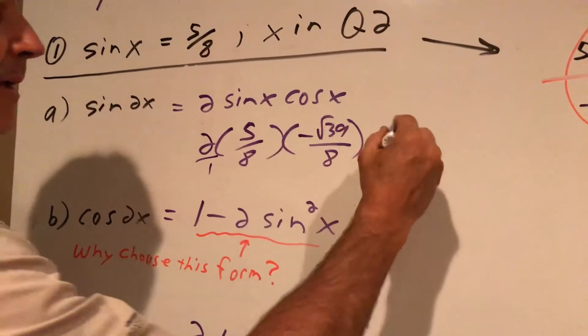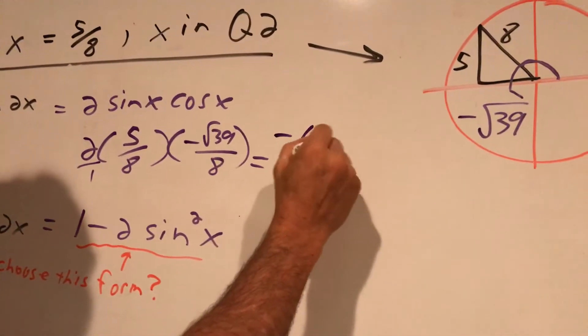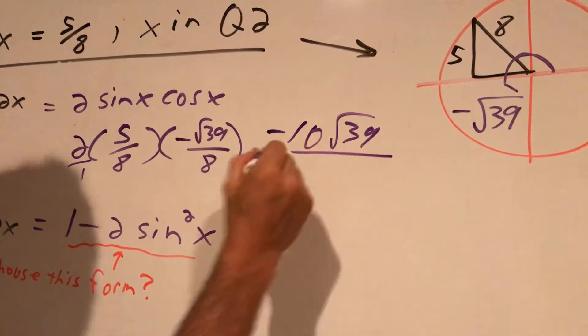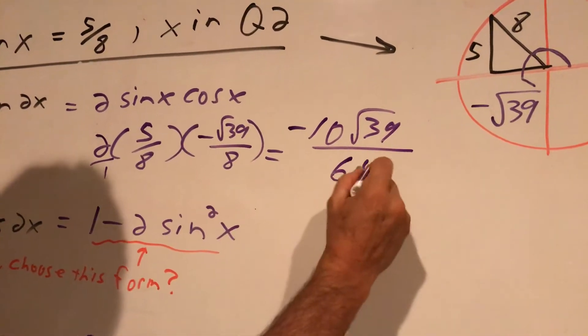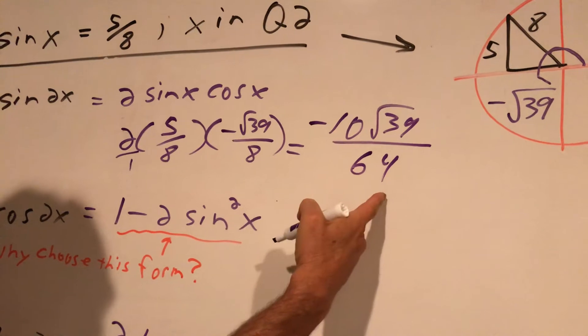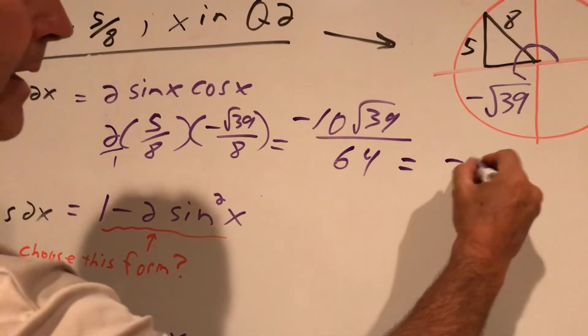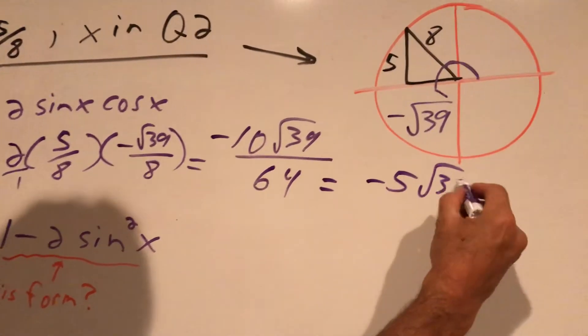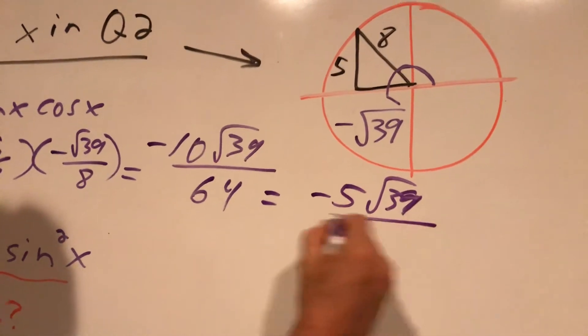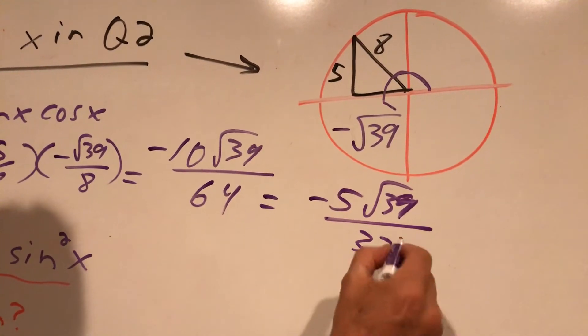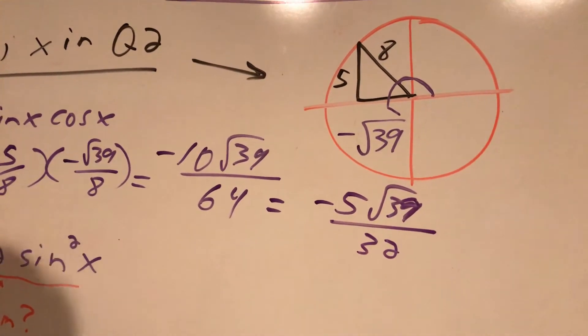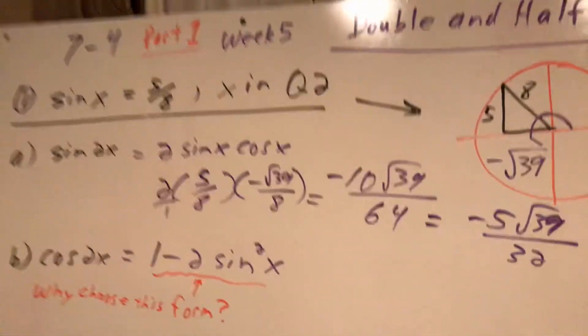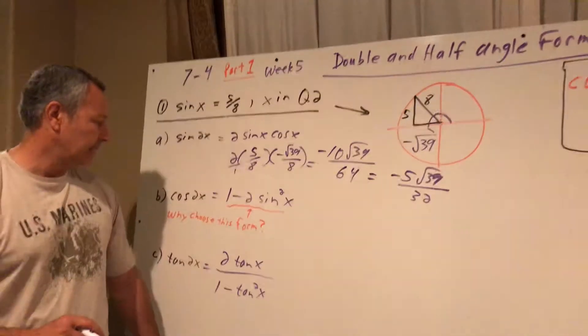Times that is negative 10 root 39, 8 times 8 on the bottom is 64. I can divide those by 2. It's going to be negative 5 root 39 over 32. You can see my writing has not improved. Anyway, so it's really just about plugging in and simplifying on this stage.